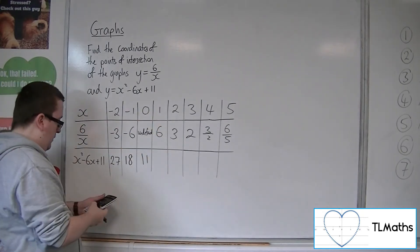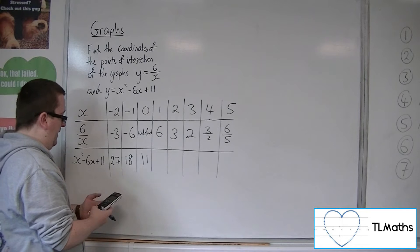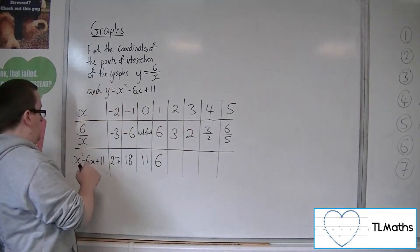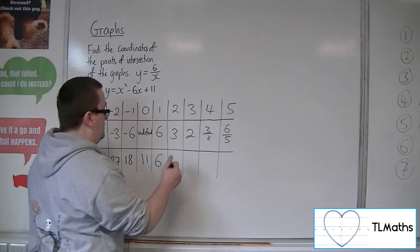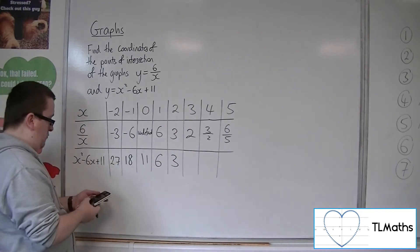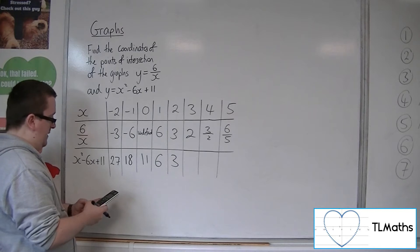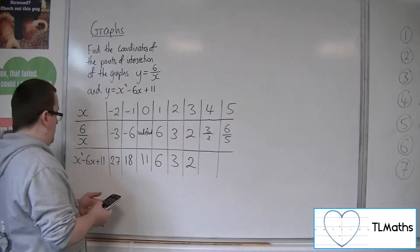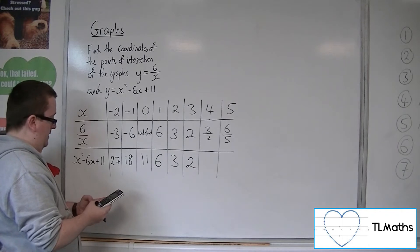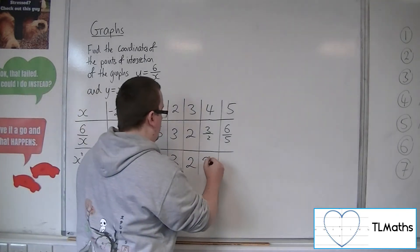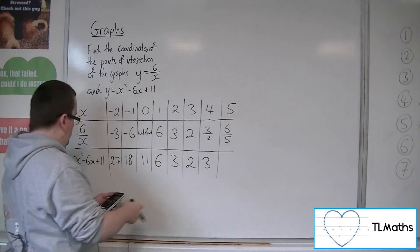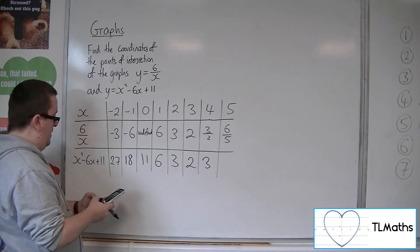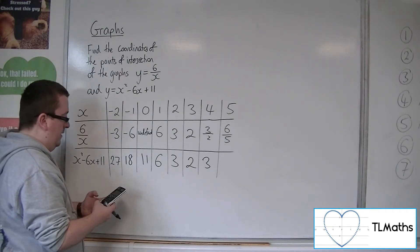When x is 1, we will have 1, take away 6, plus 11, so 6. When x is 2, we'll have 4, take away 12, plus 11, which is 3. When x is 3, we've got 9, take away 18, plus 11, which is 2. When we've got 4, we get 16, take away 24, plus 11, so 3. And when x is 5, we should get 6 because we've hit that symmetry. So just to check, so 5 squared is 25, take away 30, plus 11, which makes 6.